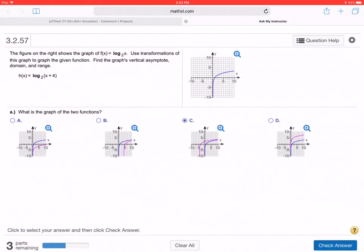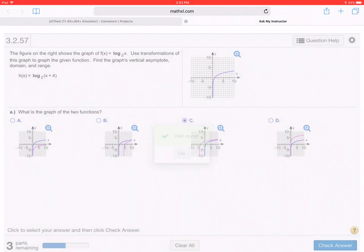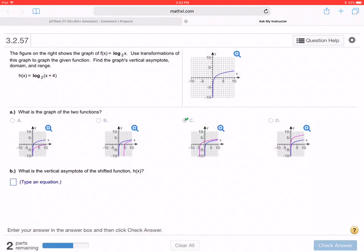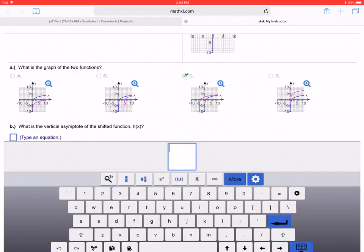The vertical asymptote, typing equation, so we said x equals negative 4. X equals negative 4. Fantastic.